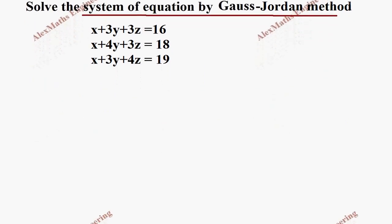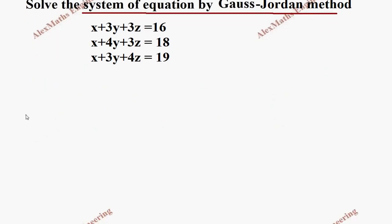From the given three equations, we are going to write the augmented matrix AB. So in this matrix, we have the first column as all the coefficients of x, which is 1, 1, 1. The second column is the coefficients of y, which is 3, 4, 3.